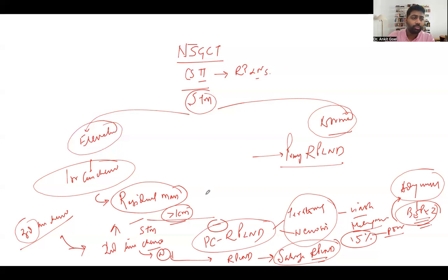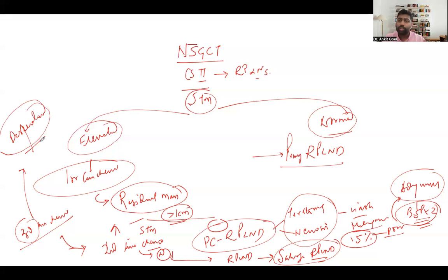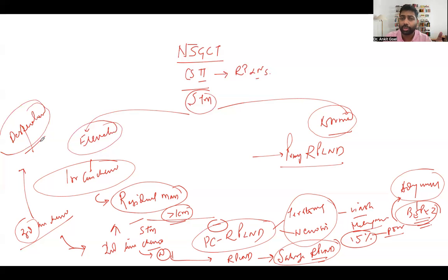There is another term — desperation RPLND. If the patient has received all chemotherapy regimens and markers remain elevated or are in a decreasing trend, with no further chemotherapy options available, the next option is RPLND. However, this is only possible if the patient has metastasis limited to particular lymph nodes that can be removed surgically. If the patient has widespread metastasis, you do not offer desperation RPLND.